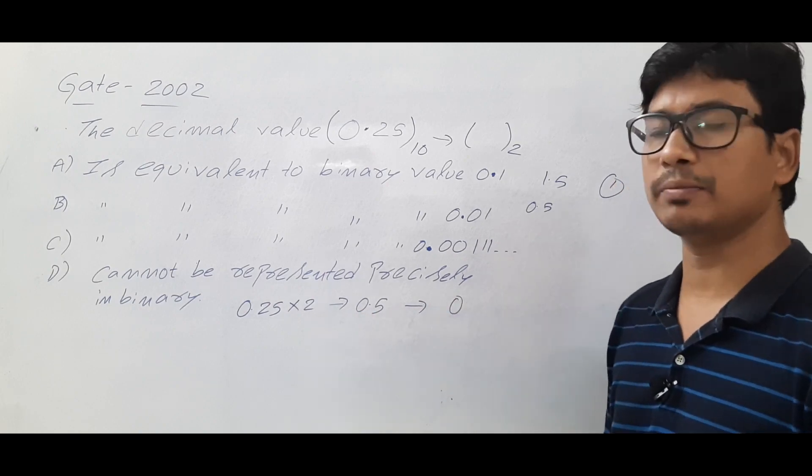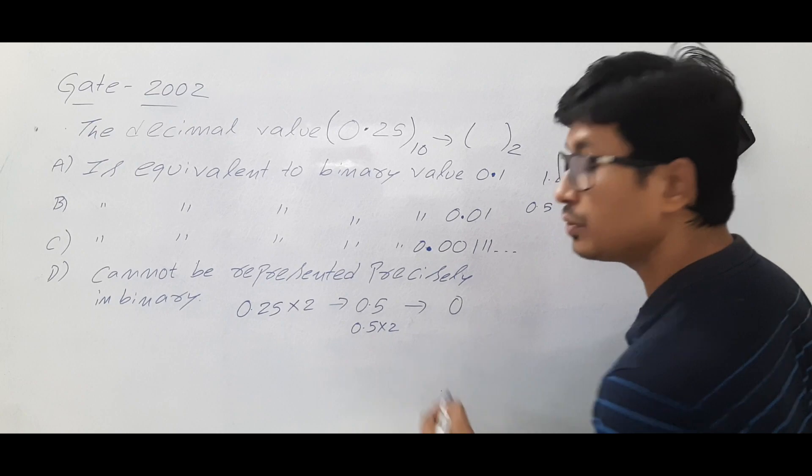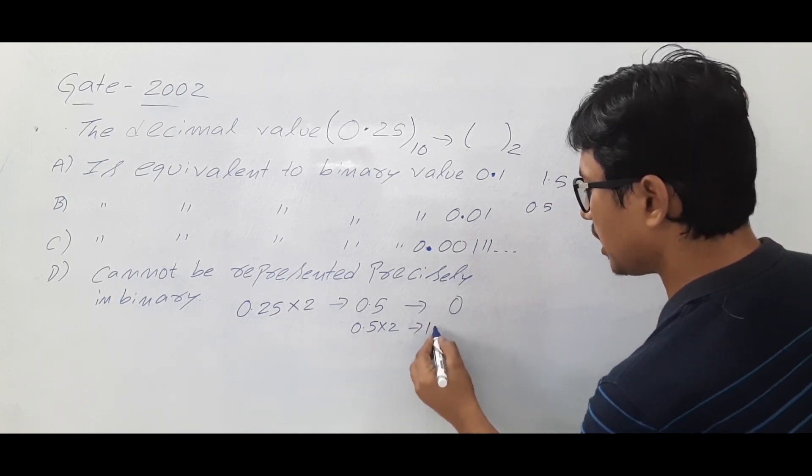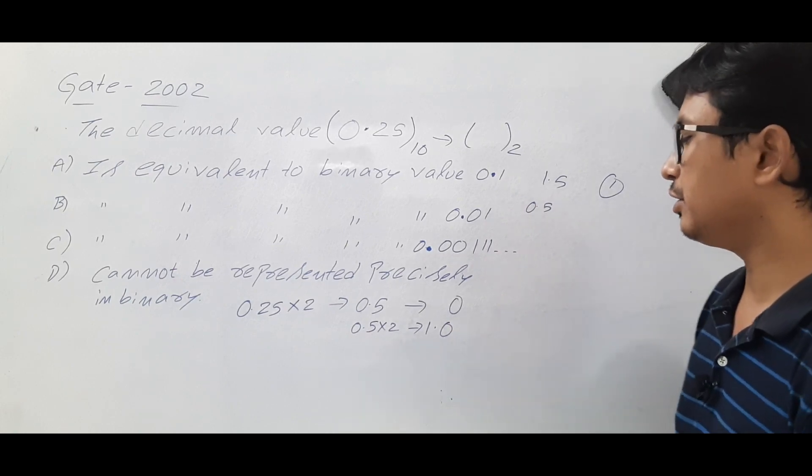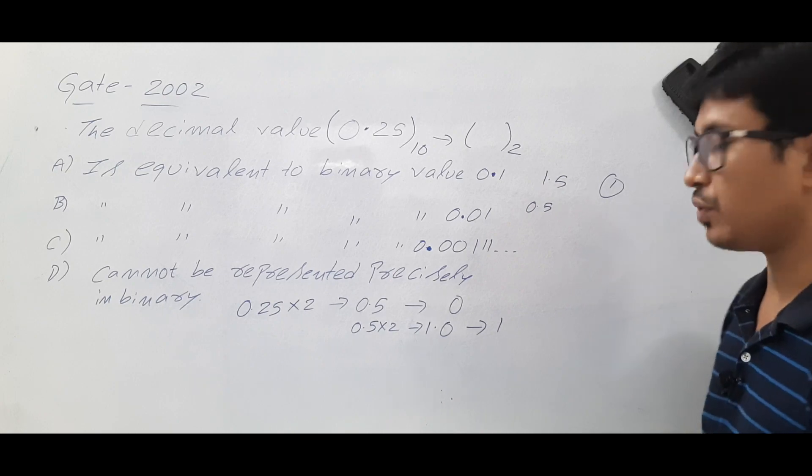Now I got the 0.5, so I kept 0. Now again, if I multiply 0.5 into 2, I will get 1.0. If I multiply 0.5 into 2, I will get 1.0. So let me keep it as 1 here.